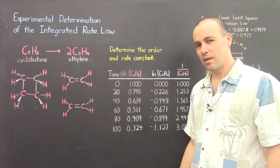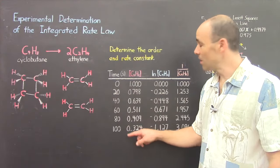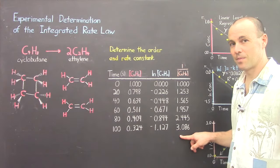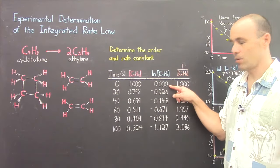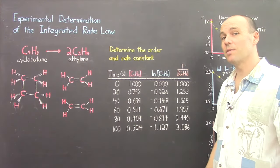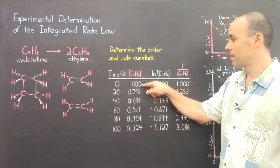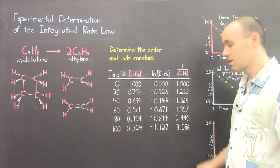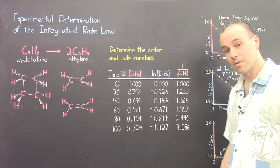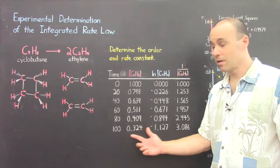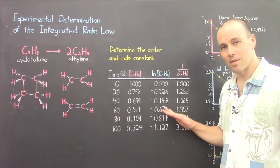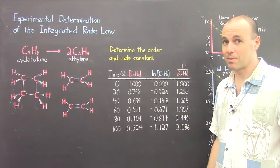In the laboratory you run this experiment and at several different times measure the corresponding concentrations of the reactant. Given this set of data, which is simple to collect, we can determine the reaction order. In addition to the concentrations, we'll need the natural logs of the concentrations and also the inverse concentrations. We calculate the natural log of 1, which is zero, and the corresponding natural logs of the rest of the concentrations. Also, 1 divided by the concentration gives this set of inverse concentrations. These three sets of numbers are going to help us determine if it's zero order, first order, or second order.